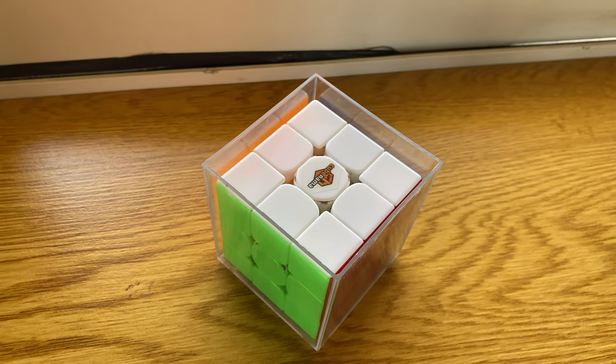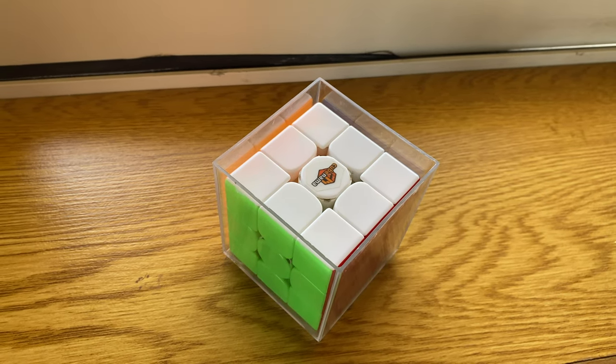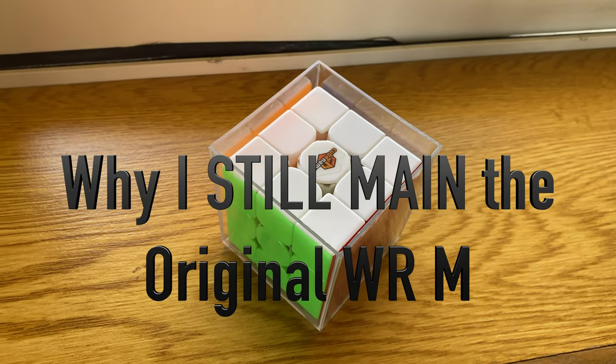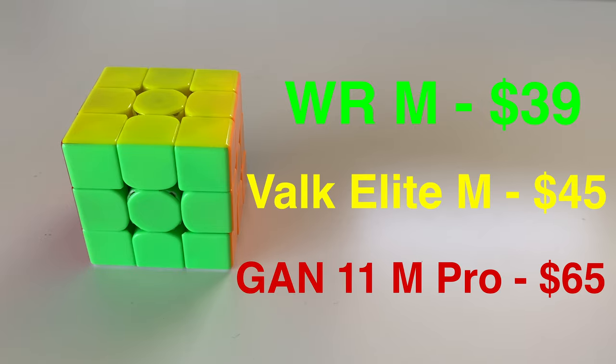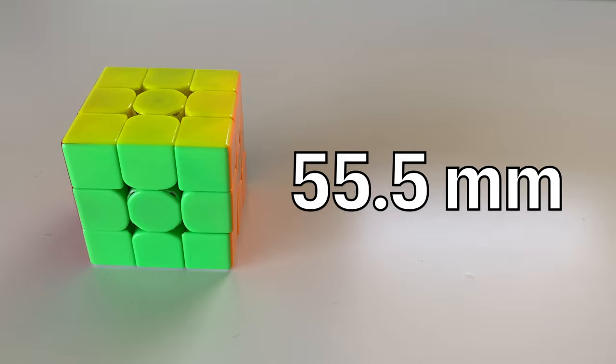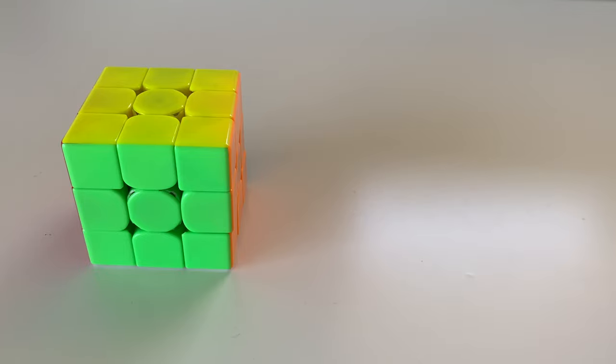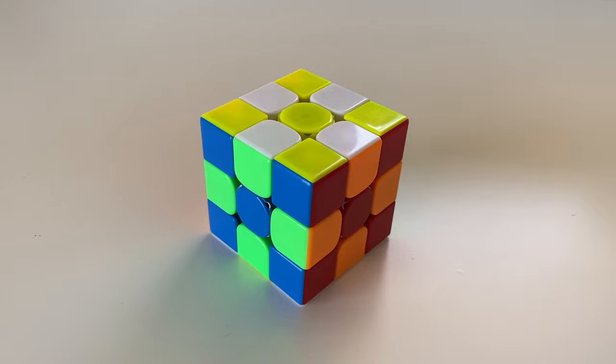Hey guys, it's me Ram here and in today's video, I'm going to be telling you guys why I still main the original WRM 3x3. So let's begin with some basic specs. This puzzle is priced at around 39 US dollars which is quite a bit cheaper than the flagships from GAN and GE. It is 55.5 millimeters on each side and can be bought in black and stickerless. The stickerless shades contrast quite nicely and I've had no problem whatsoever with recognition.